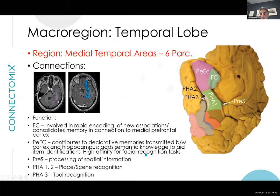That concludes a whirlwind tour of two extra lobes of the brain and their parcellation maps. While it is extensive, the basic principles of what these areas actually do should make sense, and you don't need to know each parcellation in encyclopedic detail in order to start analyzing connectomes.